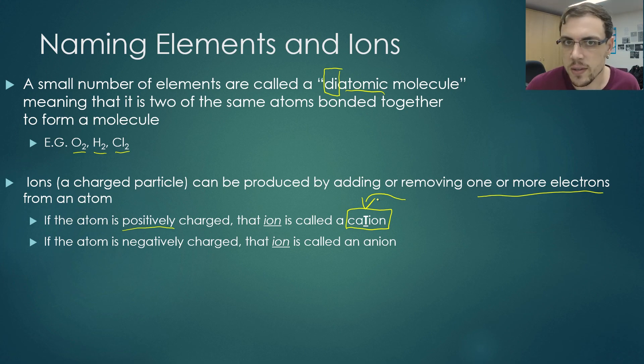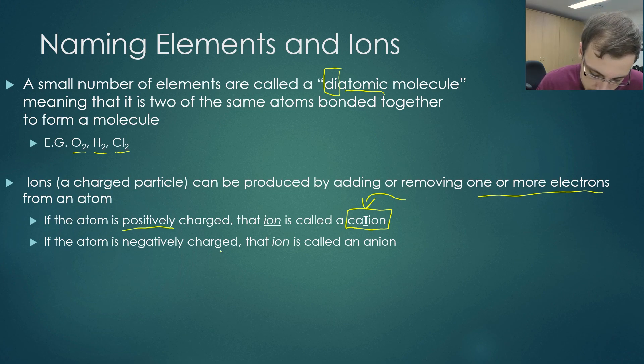Cations are positive. If an atom is negatively charged, then that ion is called an anion. Anions are negative, cations are positive.